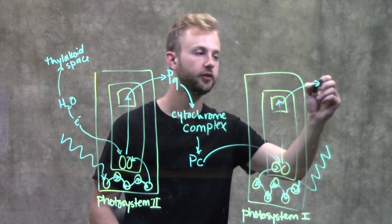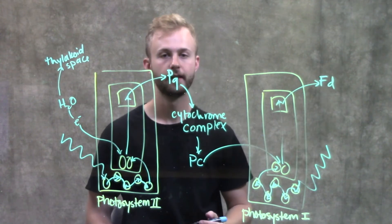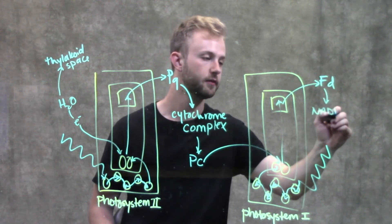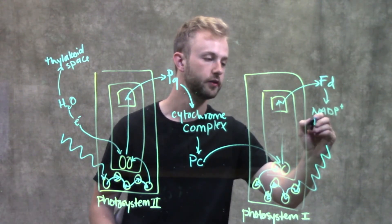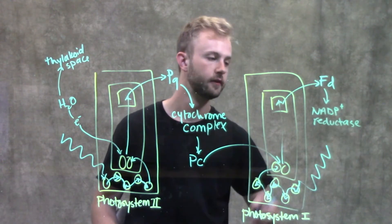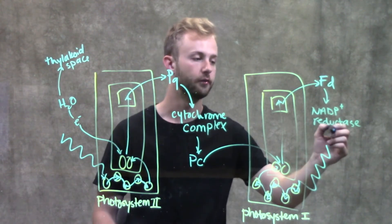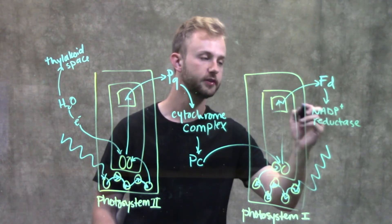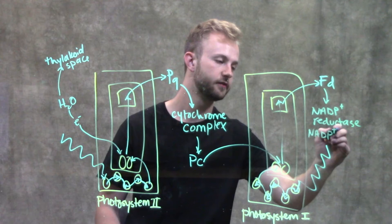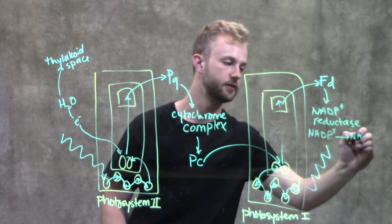The first molecule it goes to is ferridoxin, and then to NADP plus reductase. This NADP plus reductase uses these electrons to reduce NADP plus to NADPH.